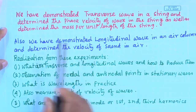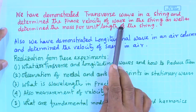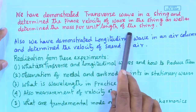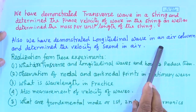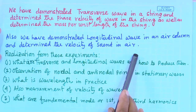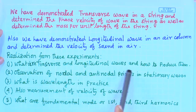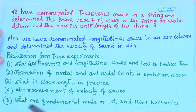We have demonstrated transverse waves in a string and determined the phase velocity of the wave in the string, as well as the mass per unit length of the string. We have also demonstrated longitudinal waves in an air column and determined the velocity of sound in air. From these experiments, we realized what transverse and longitudinal waves are and how to produce them, and observed nodal and antinodal points in stationary waves, and what wavelength means in practice.